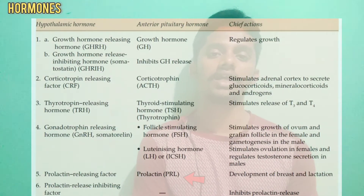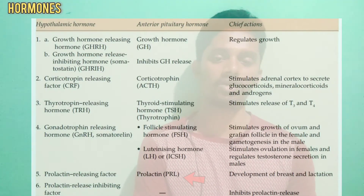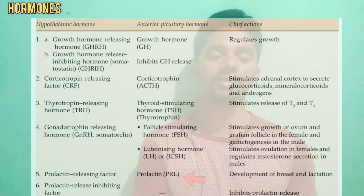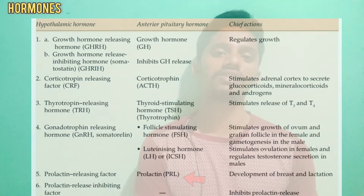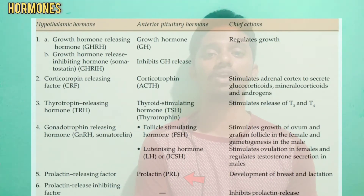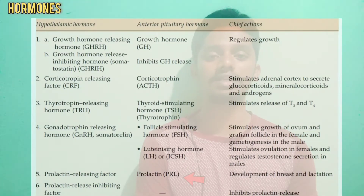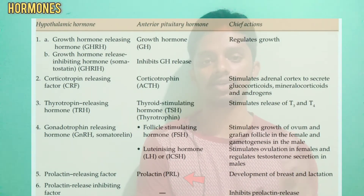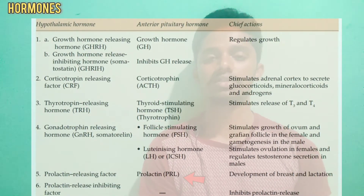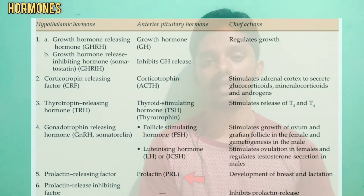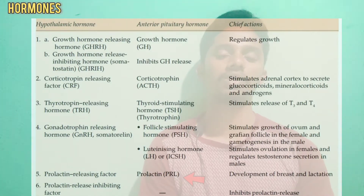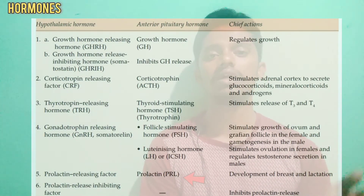The next hormone is prolactin, produced by the anterior pituitary. Its main function is in females: it helps with breast development and lactation. Prolactin is stimulated by Prolactin Releasing Factor from the hypothalamus, and inhibited by Prolactin Release Inhibiting Factor, which reduces prolactin levels.